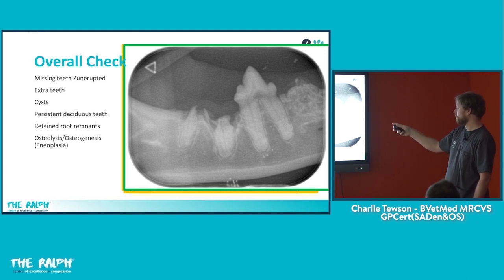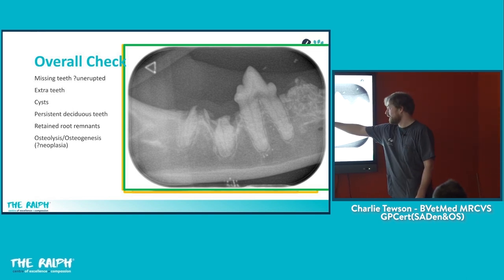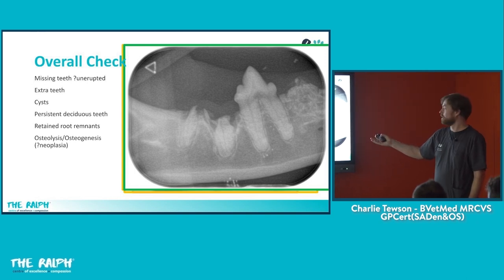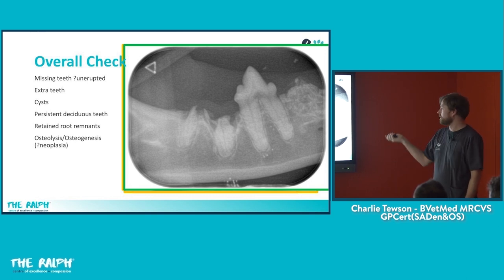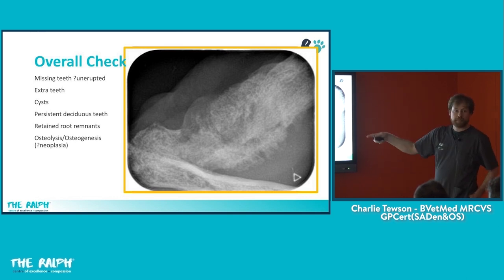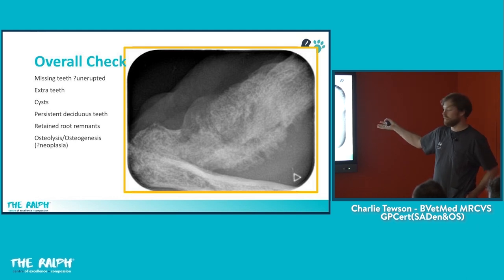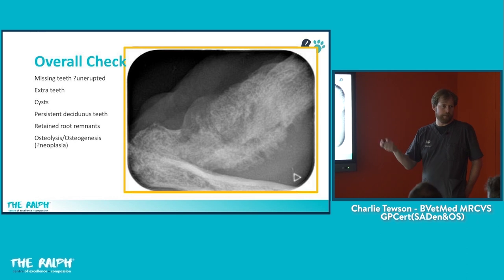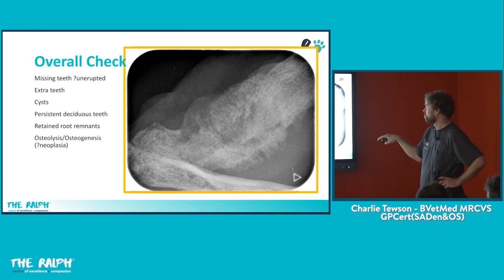Retained root remnants. This case was referred because of complications post-surgery — they'd done a crown amputation. With good quality dental x-rays it's pretty clear that this was not an appropriate candidate for a crown amputation. This cat had a lot of inflammation at the back of the mouth, was really painful, and immediately much better once those roots were taken out. An important part of the overall check is to take a step back and check for any really weird bone — this extreme example of a cat's left mandible is pretty typical for squamous cell carcinoma, though without a biopsy it could be osteomyelitis.